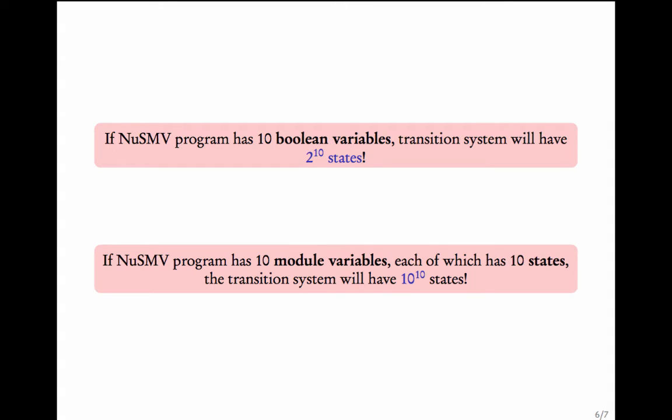This is to say that if we have 10 transition systems, each with 10 states, then the joint behavior is represented by a transition system with 10 raised to 10 states. It will be a product. If you remember our previous units, we did a product construction. So it will have 10 power 10 states. A similar thing is happening in this NuSMV program. Each time we add a variable, we multiply the number of states by a factor.